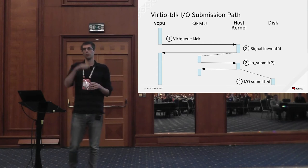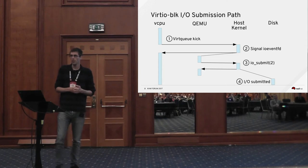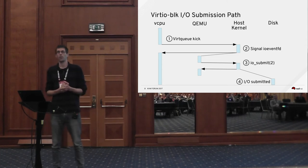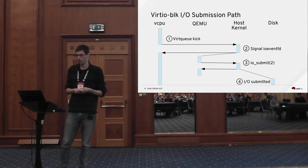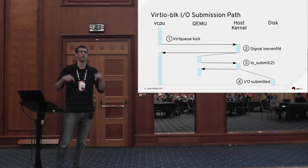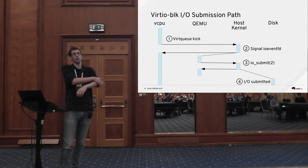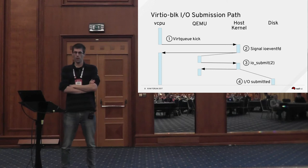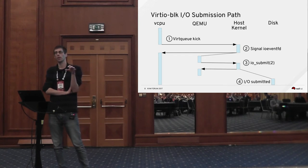Let's look at the high-level flow — the life cycle of an IO request on the submission path. When the guest submits a read or write to the storage device, it will kick the virtqueue. The request has been put in the virtqueue, and this kick is actually a hardware register write that traps out into the KVM kernel module, so control switches from the vCPU to the host. The KVM kernel code recognizes that address and knows there is an associated IOeventFD file descriptor, which then gets signaled.